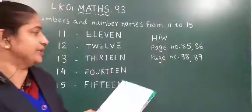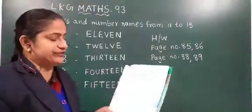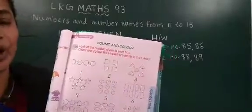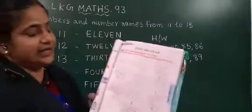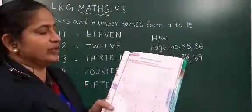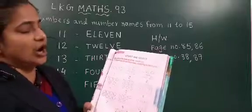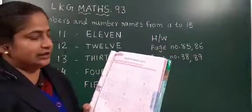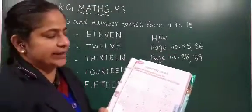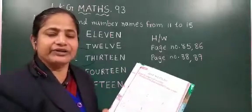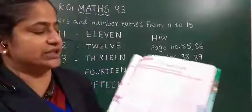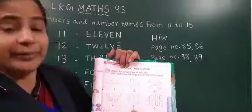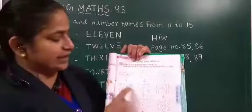On page number 85 — this is page number 85. Yeh aapko kya karna hai? Count and color. Look at the number given in each box.